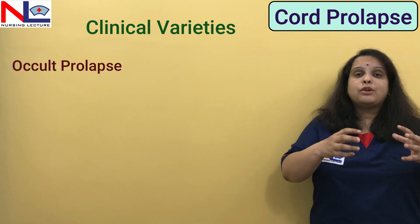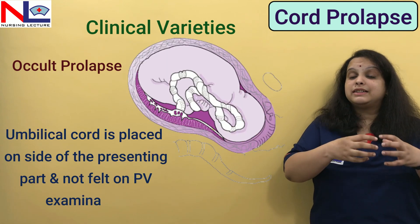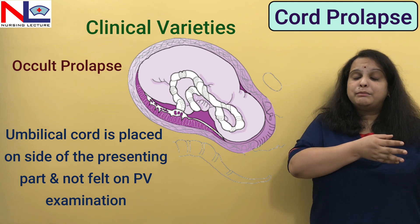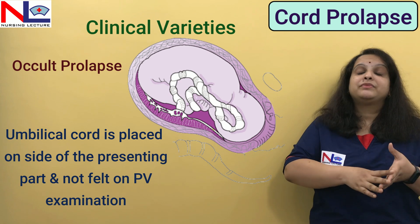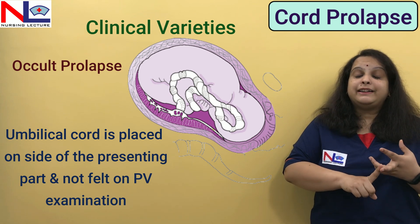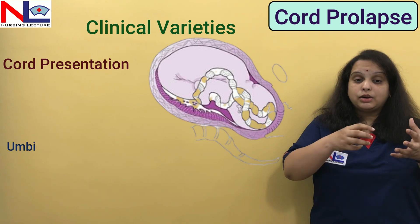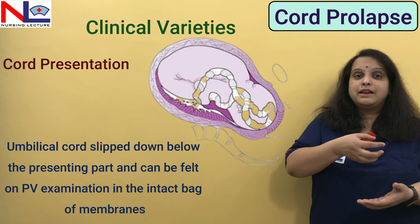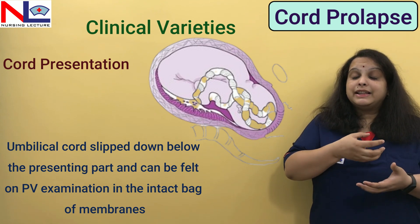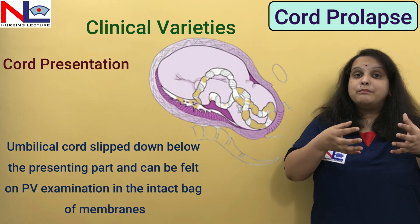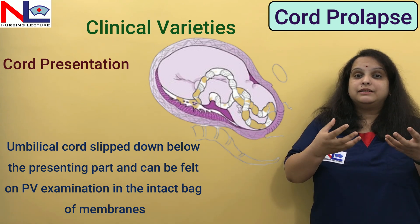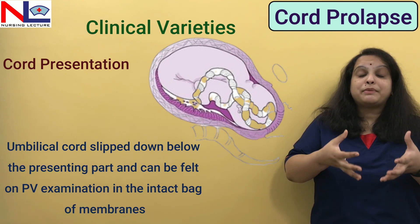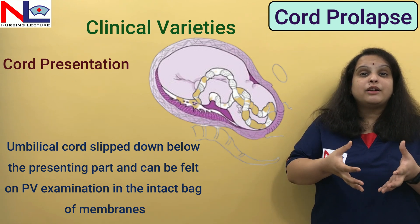In occult prolapse, the umbilical cord descends down but lies to the side of the presenting part itself, and here the membrane gets ruptured. The second clinical variety is cord presentation, in which the umbilical cord comes in front of the presenting part and lies before it, but in that condition the amniotic membrane — the fetal membrane — still remains intact; the bag of membranes is still present and the membranes are not ruptured yet.